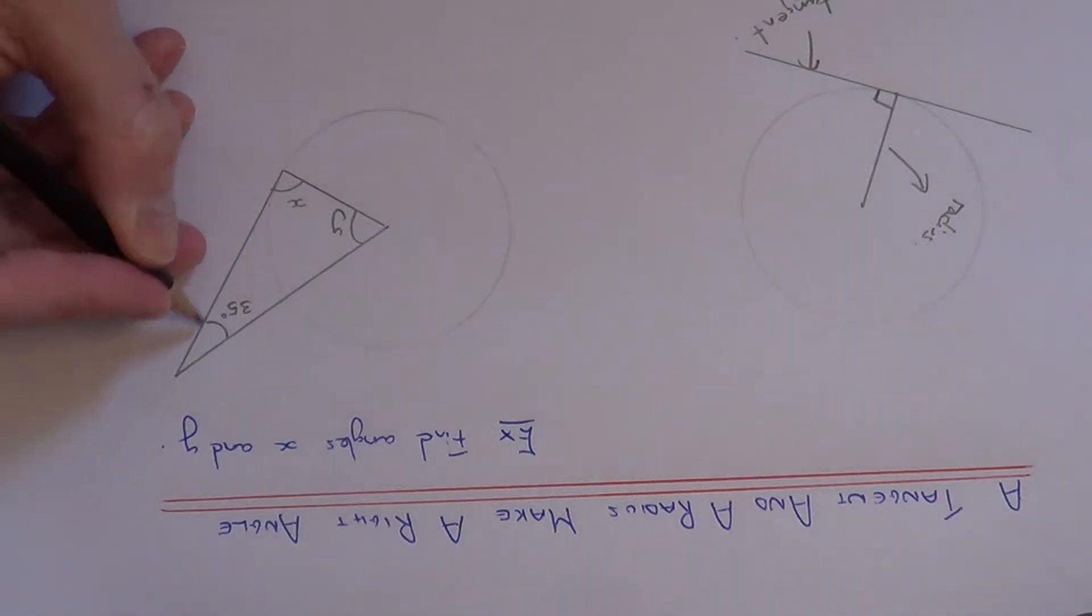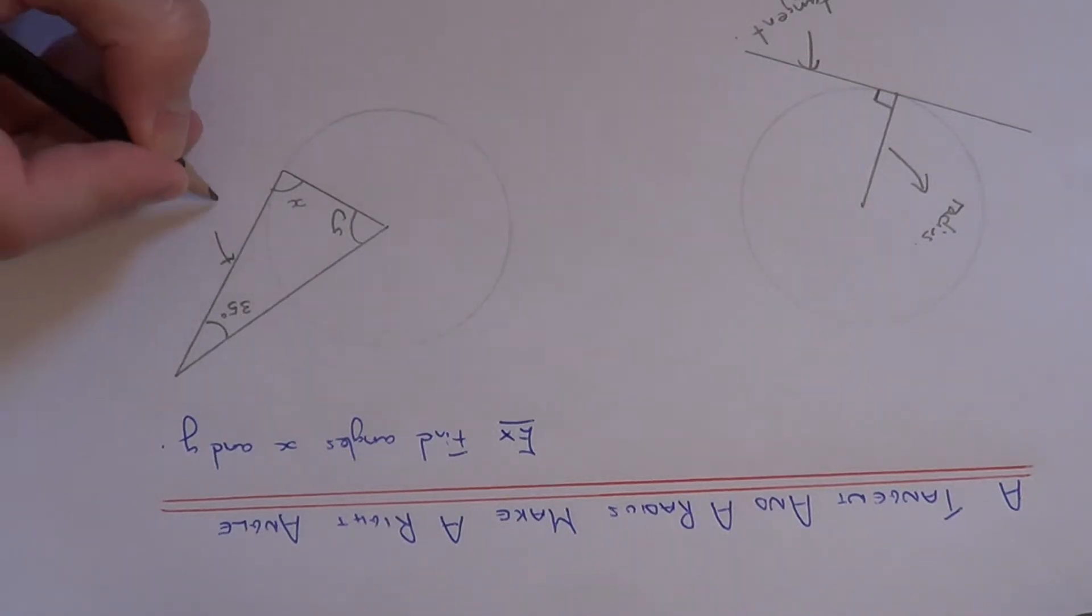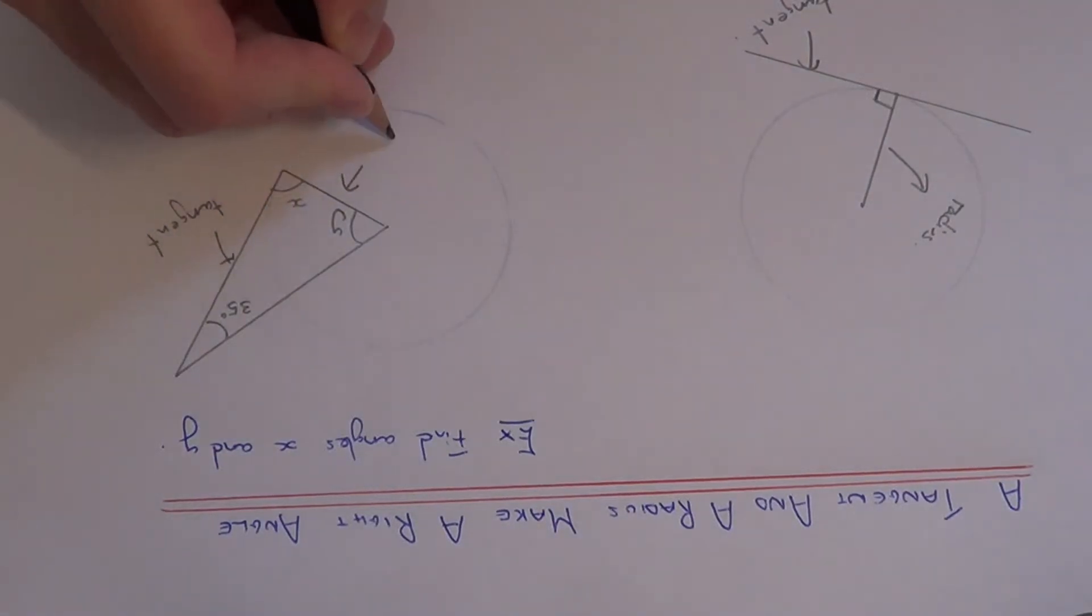As you can see, this line here is the tangent and this line here is the radius. So angle x will be 90 degrees because the tangent and the radius make a 90 degree angle at the point of contact.